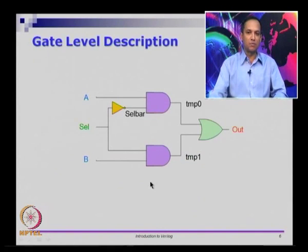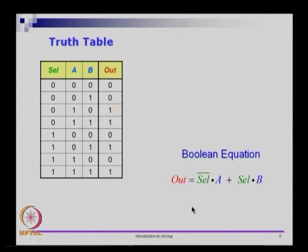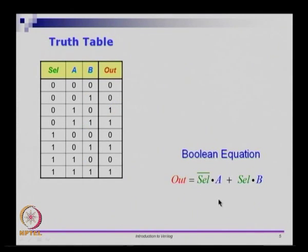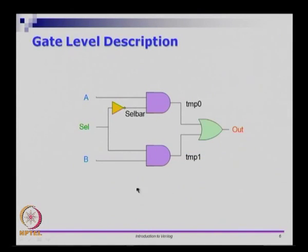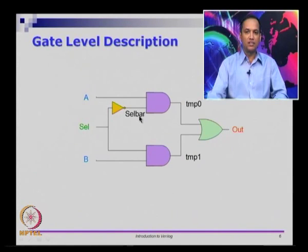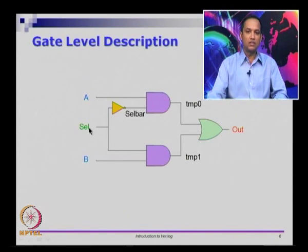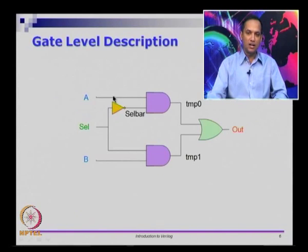This is a gate level description. If you take the Boolean expression and convert it to a circuit, this is what you would have. Select is sent through an inverter to get select bar; you AND that with a to get temp0. Then you AND select with b to get temp1. Temp0 OR temp1 gives the output. If you want to do this, once you design it as a circuit like this on paper, you should be able to go and do this using a breadboard also.